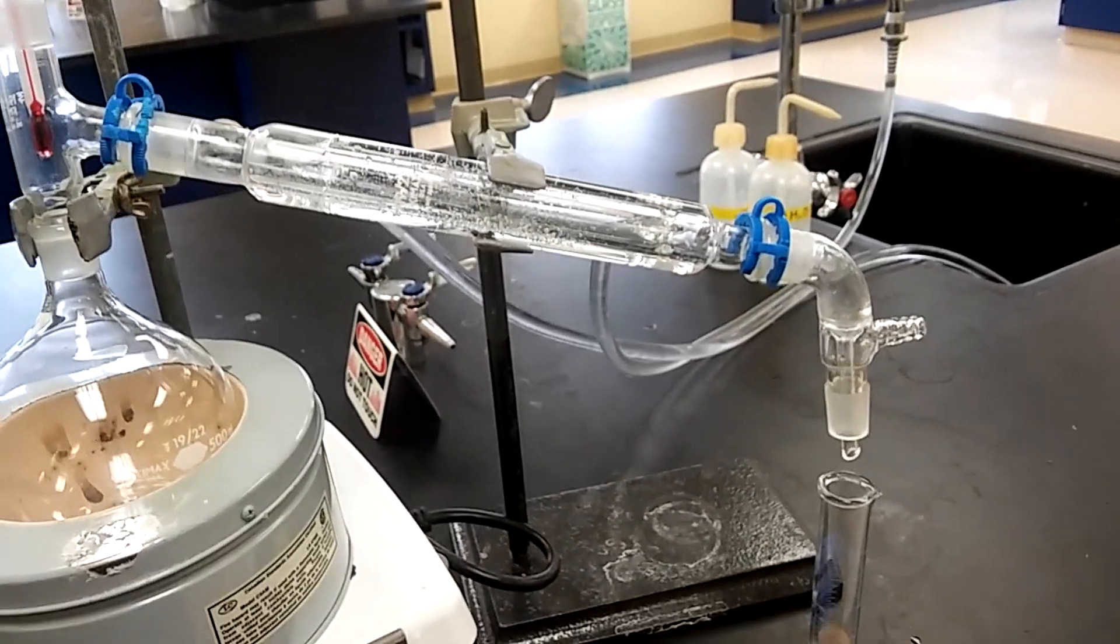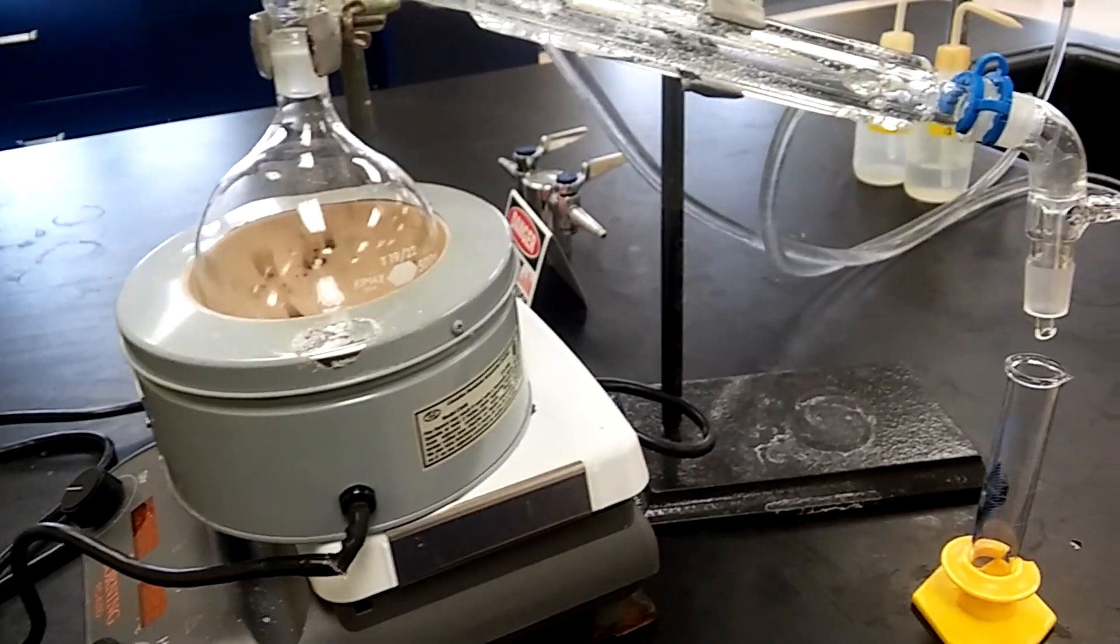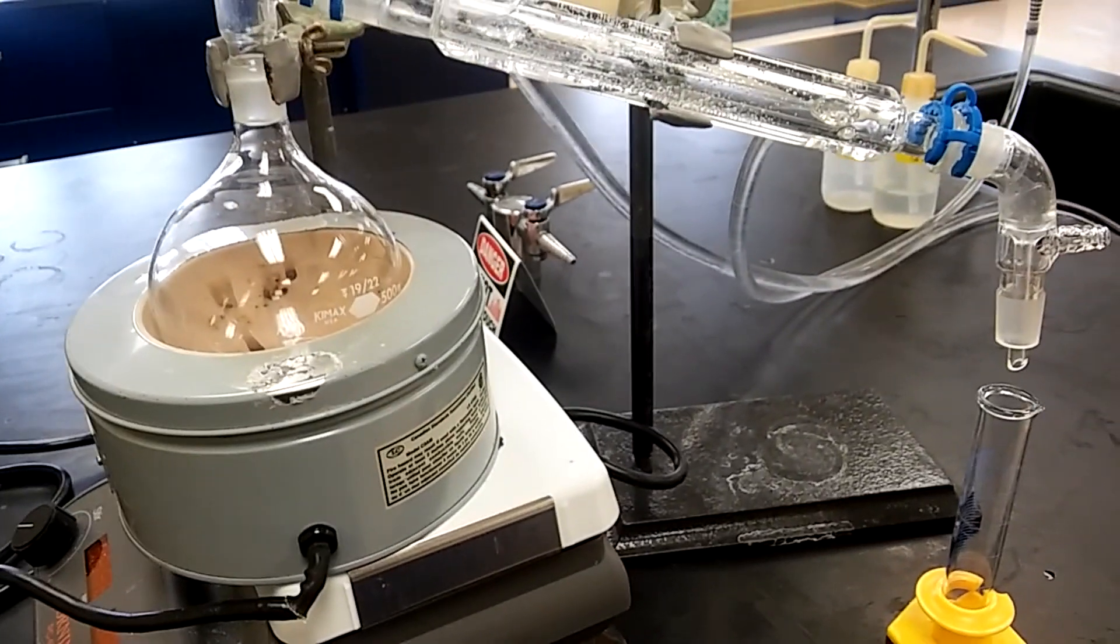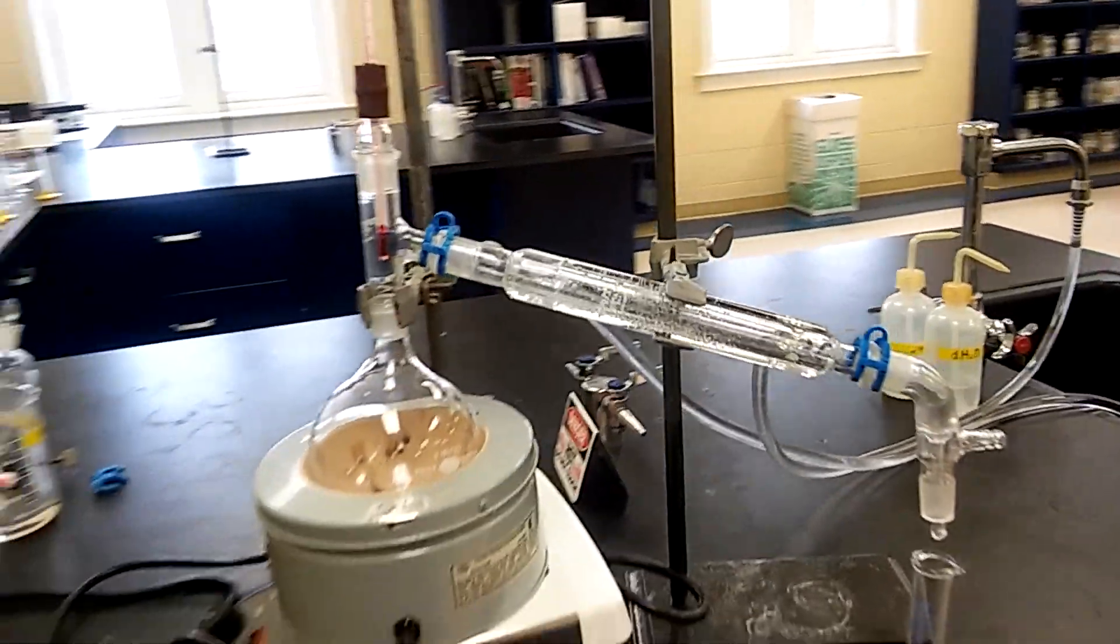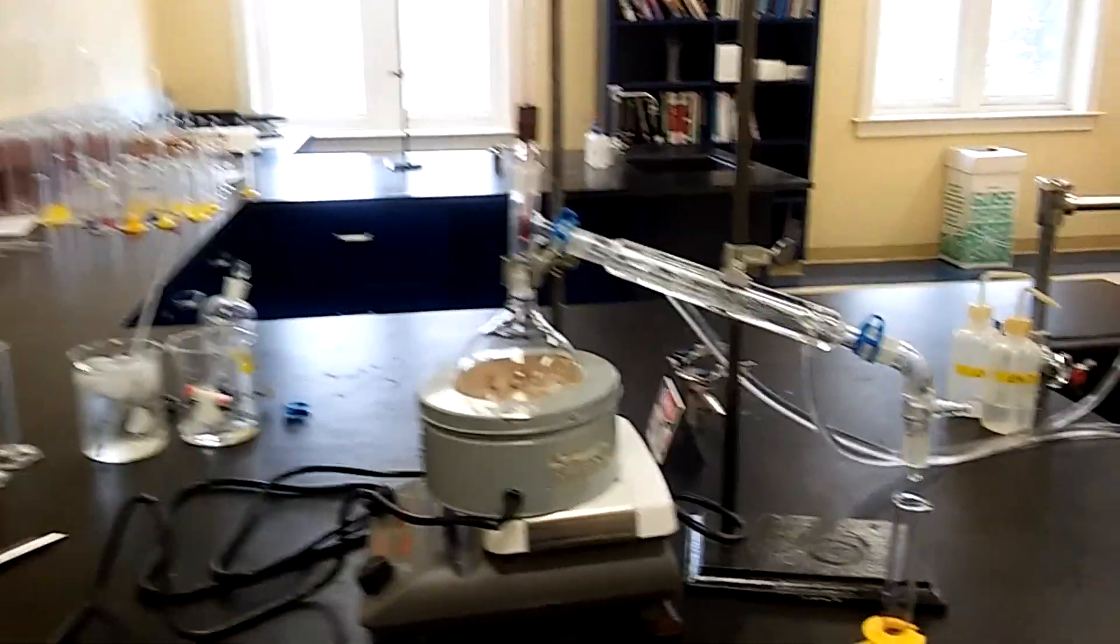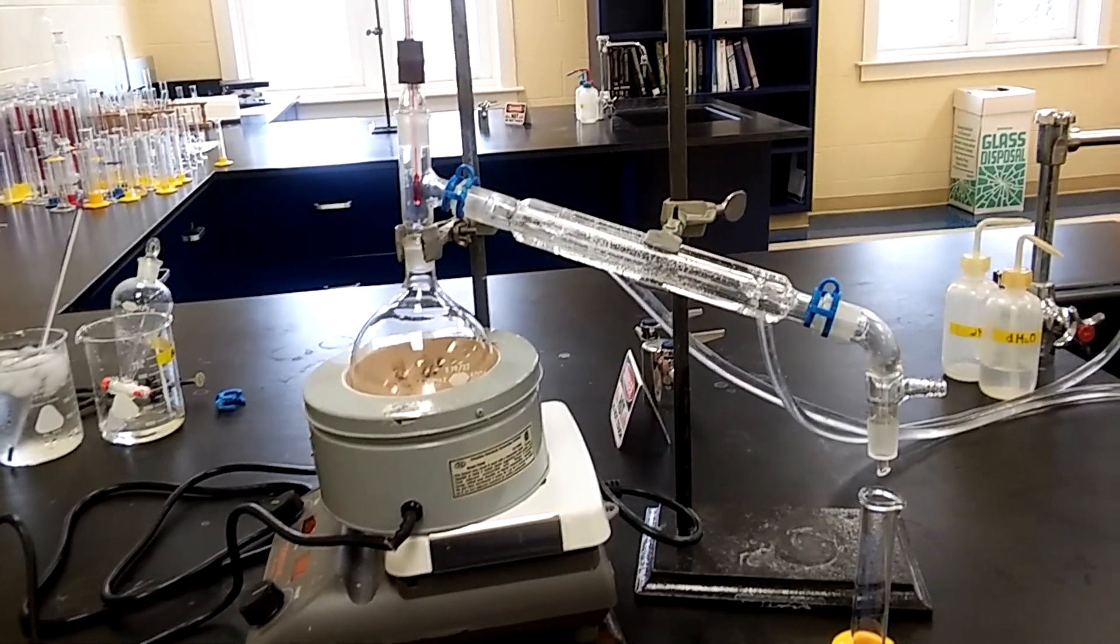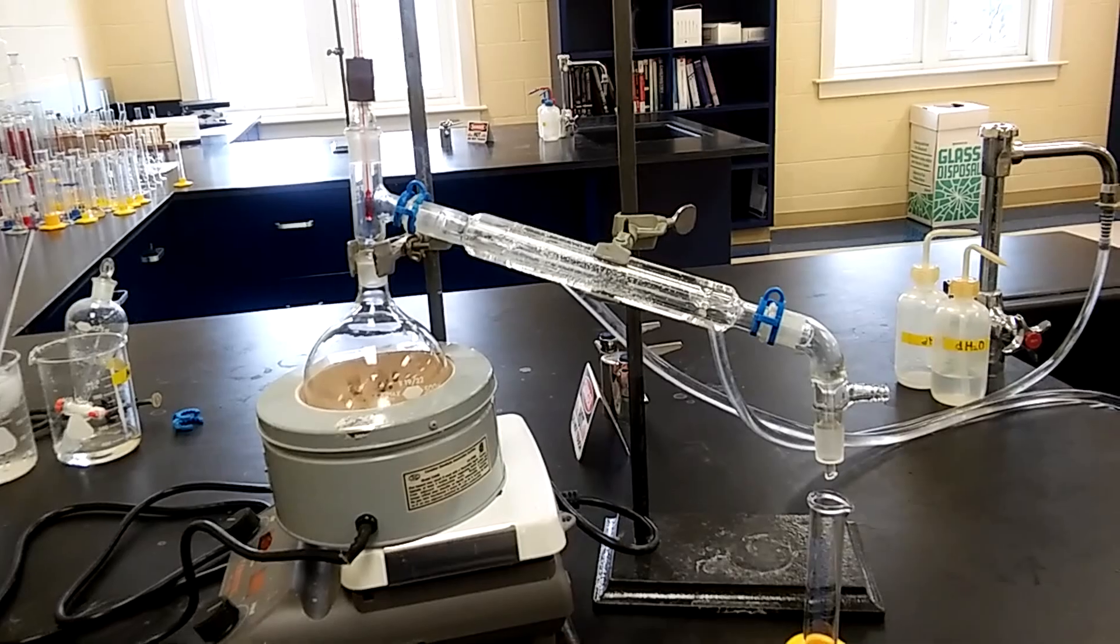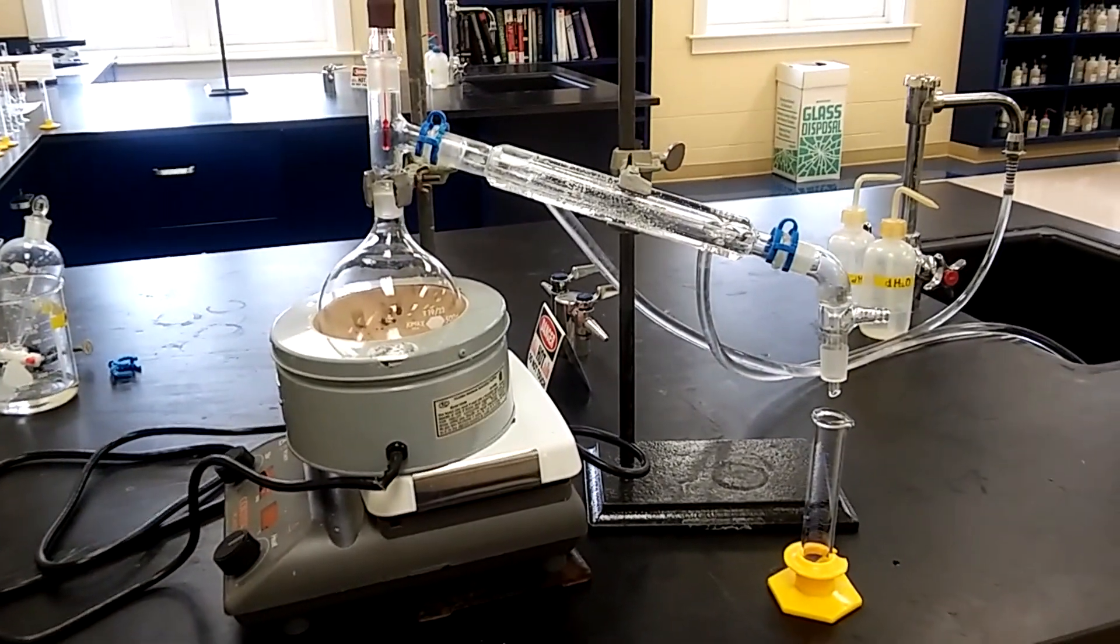Don't forget to turn on your condenser. Keep the temperature low and when you see that the temperature is about 49 to 52, start collecting your product. That's a pretty simple setup. I will come back when the product is distilling and show you the temperature and how the flask looks.